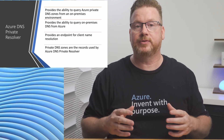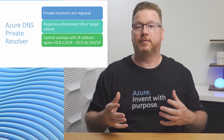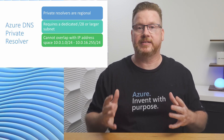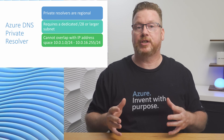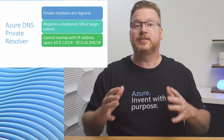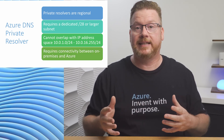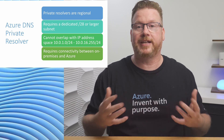There are a couple of things to know about private resolvers: they're regional and will only work with VNets in the same region. If you have multiple regions, each will need a private resolver. An endpoint requires a dedicated /28 or larger subnet. Also, avoid using the 10-dot address spaces shown on screen — these are reserved and shouldn't be used with a private resolver subnet.